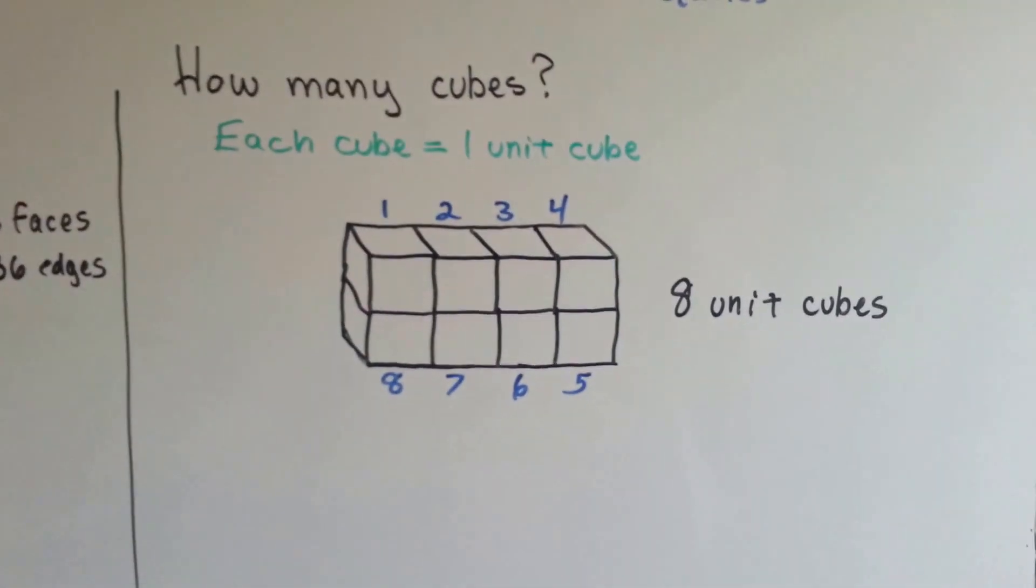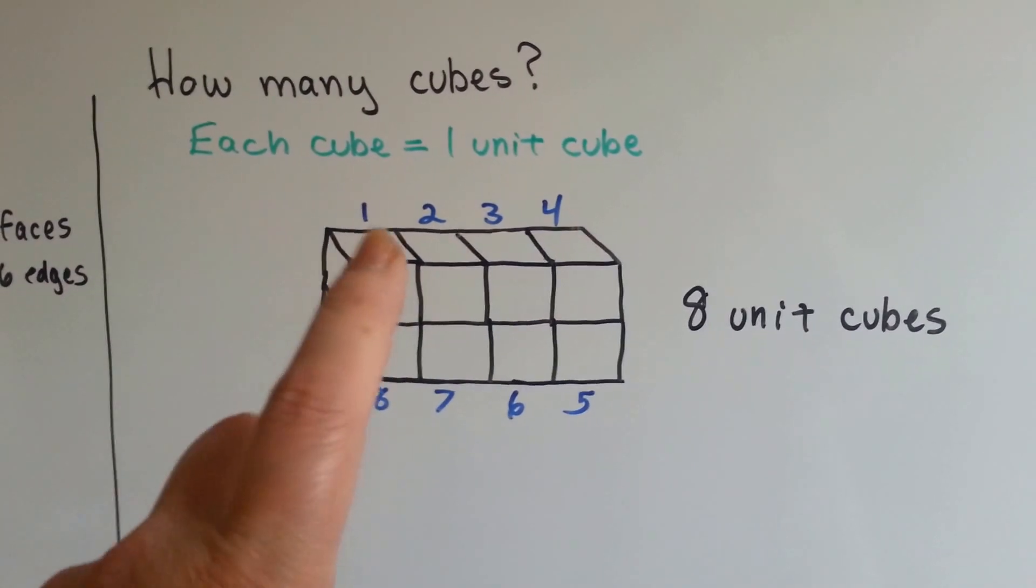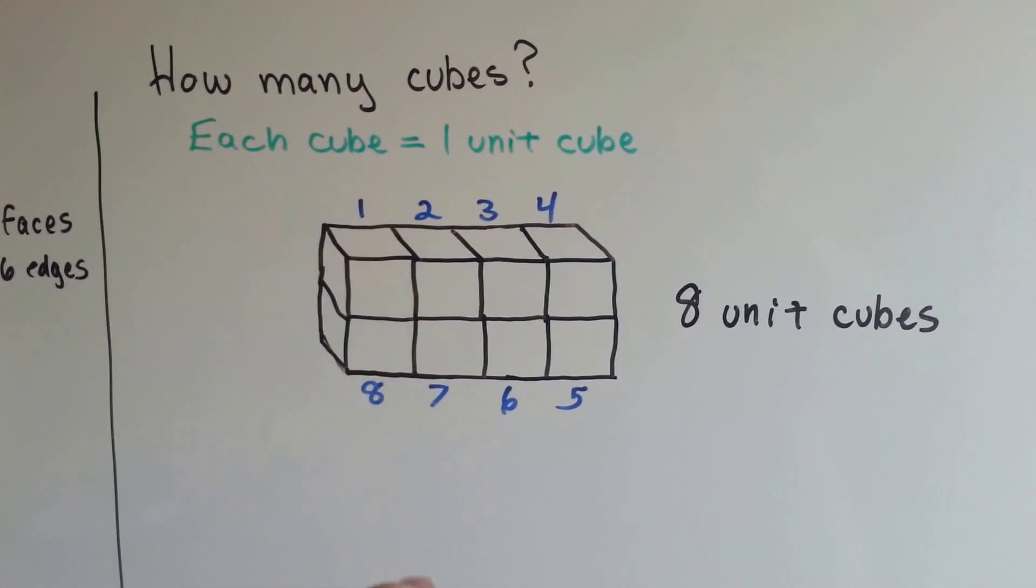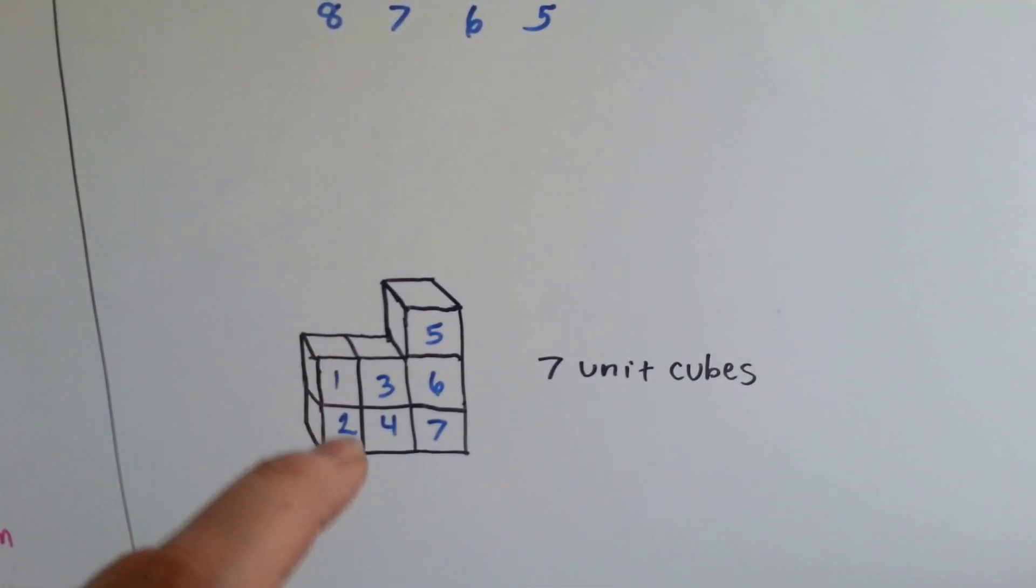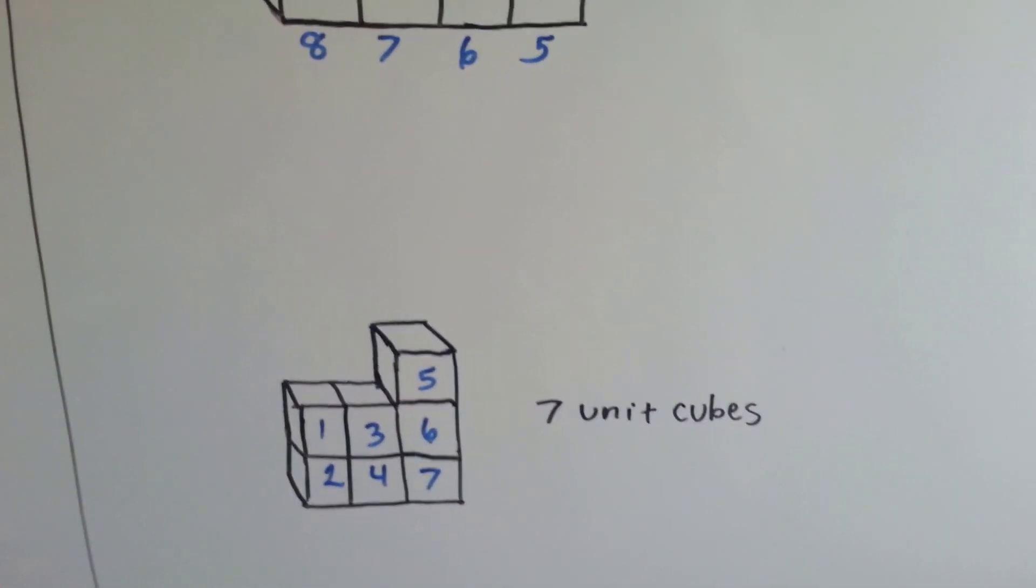We can count them. If you see a problem that says how many unit cubes, you just count each cube. Each one is a unit cube, so there's eight. In this one, there's one, two, three, four, five, six, seven unit cubes. So it's really easy to count them.